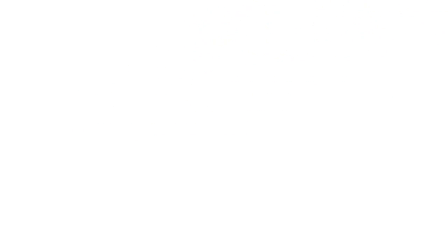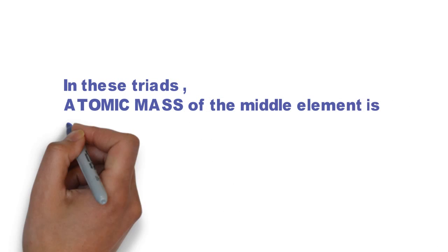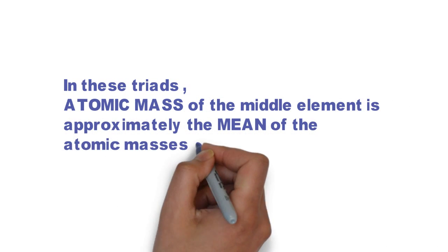In these triads, the atomic mass of the middle element is approximately the mean of the atomic masses of the other two elements.